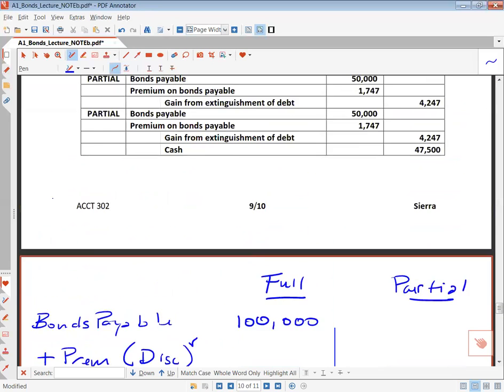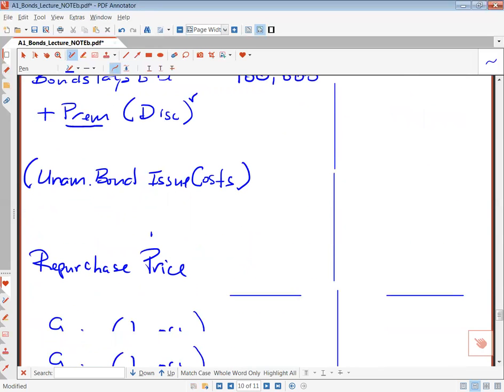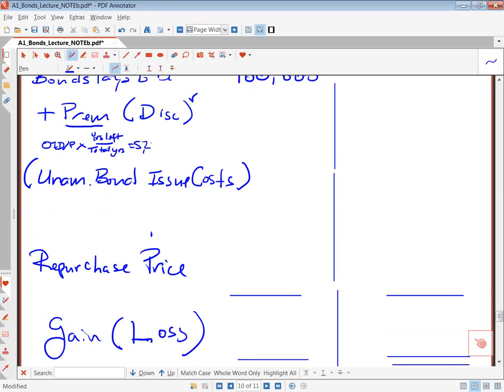But in this case, we started with $5,242 premium. So it's going to be original issue discount, or in this case, premium, times years left over total years, which will equal $5,242. And it's retired in the first year, so it's three minus one year, over three, two-thirds. And I'm going to calculate along with you. Grab your calculator. Convince yourself you can do this in a reasonable amount of time. $5,242 times two and divided by three is $3,495. So this will be an addition of $3,495.